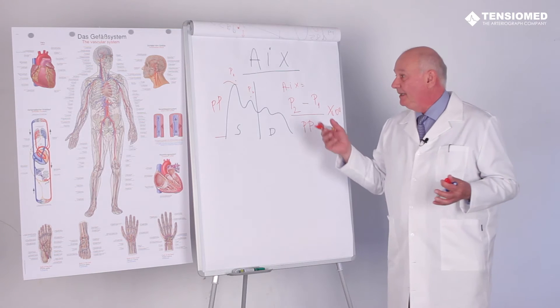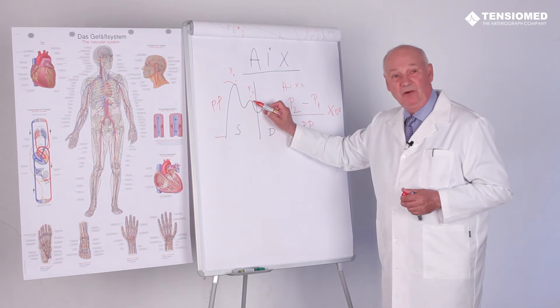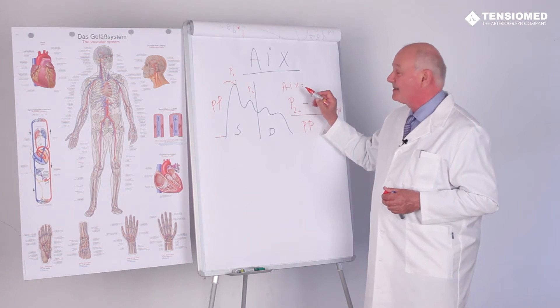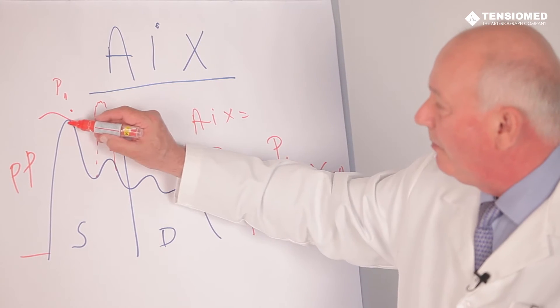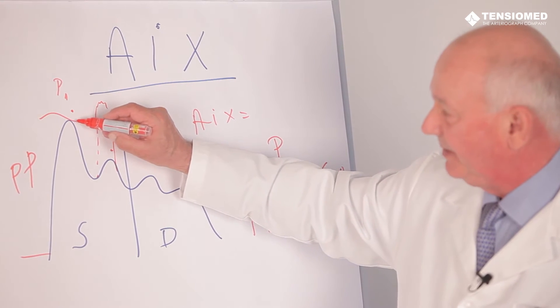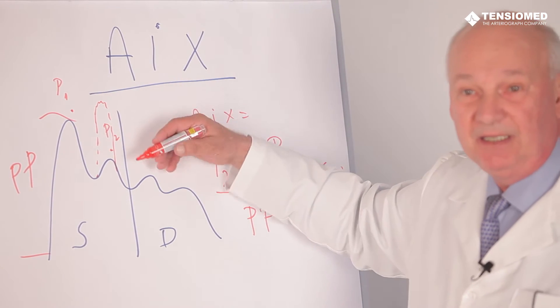Obviously, in this case, because the P2 is lower than the P1, the AIx will be negative. If the P2 is getting to be increased, once it reaches the level of the P1, it will be zero, and then it will be positive.